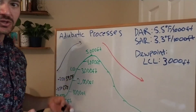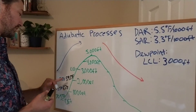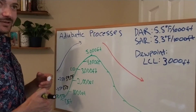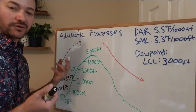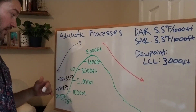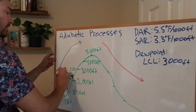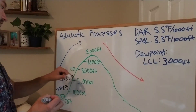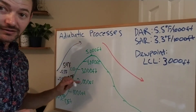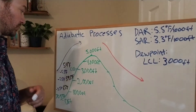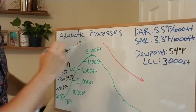I want you to get the question right because you understand the process. Still ascending, still dry, still cooling — from 2,000 feet to 3,000 feet, 59.5 minus 5.5 degrees Fahrenheit. The temperature at 3,000 foot elevation is 54 degrees Fahrenheit. Our LCL is 3,000 feet, so now we know our dew point temperature is 54 degrees Fahrenheit.